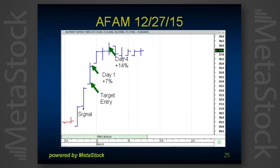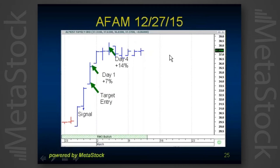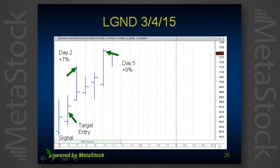This is what the Green Light trades look like — basically they look like five-day trends. This is AFAM from December 27th. It's an end-of-day signal; target entry the next day. You can see — first day we had a 7% gain, by the fourth day it was up 14%, and then the trend is over. Flat going in, flat going out. It's just a short, hard trend. This is exactly what we were looking for and this is what the strategy delivers.